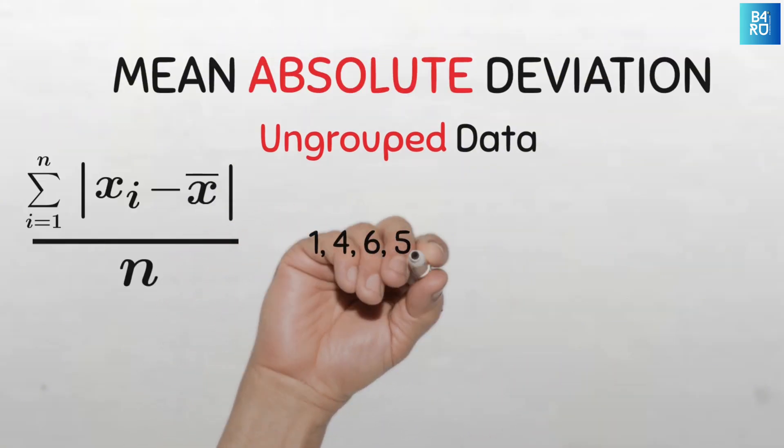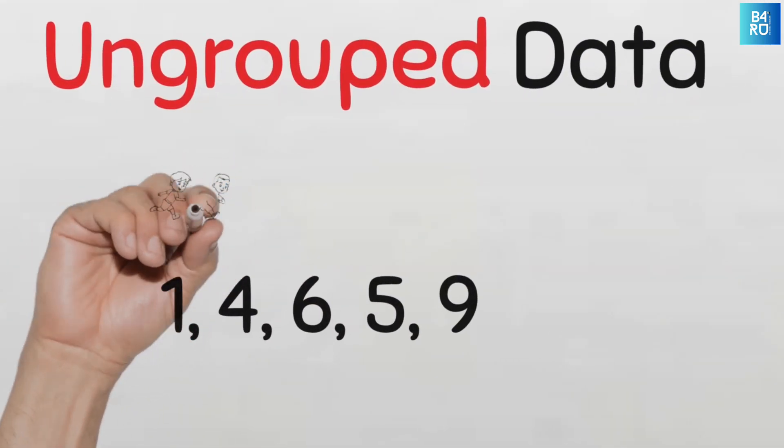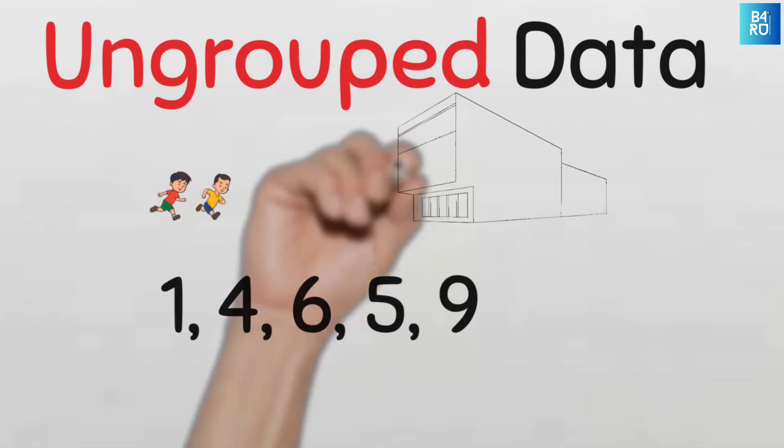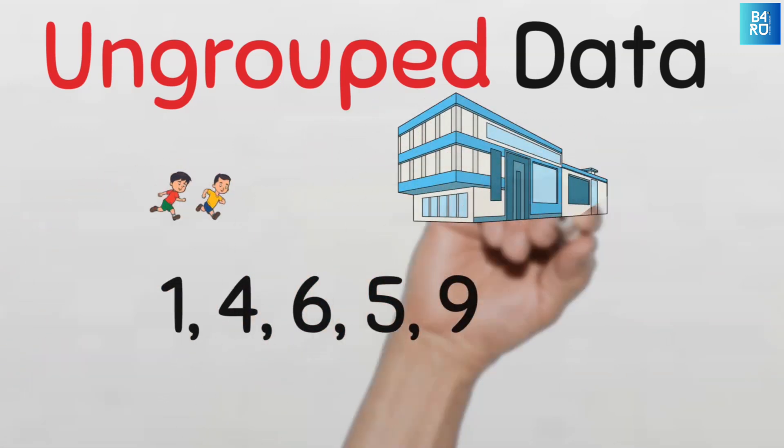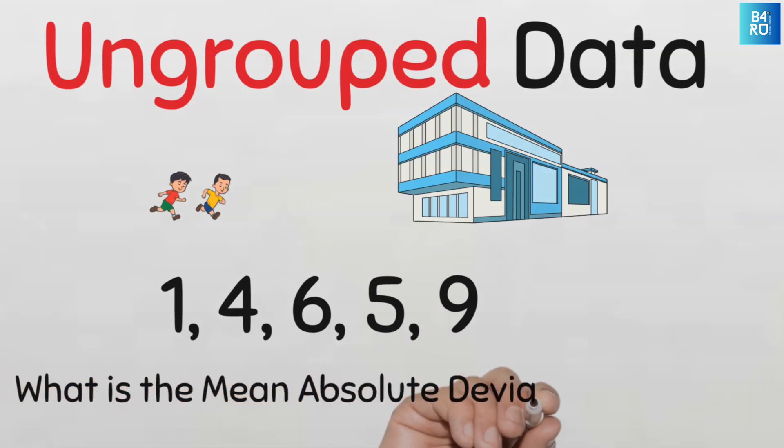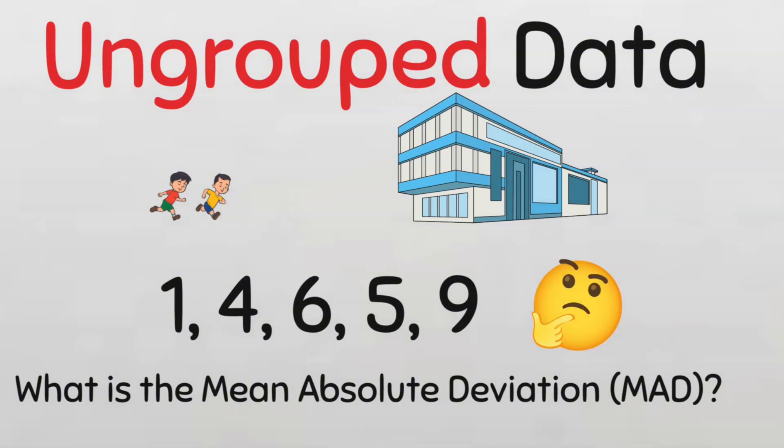Let's use this formula to find the mean deviation of this data set of the ages of all the children who attended an immunization clinic in Samaru-Zaria on the 21st of January 2025. What is the mean absolute deviation, or the mean deviation from the mean of this data?